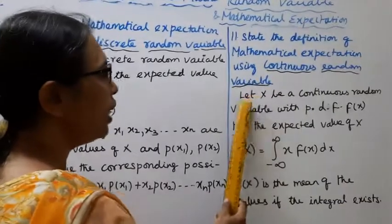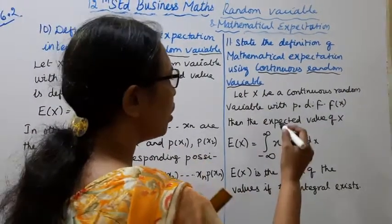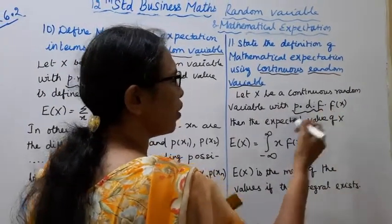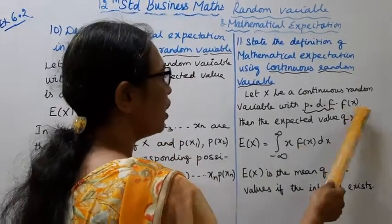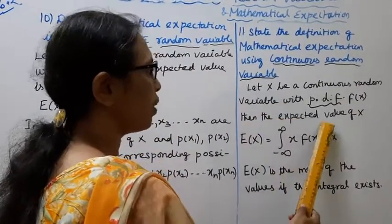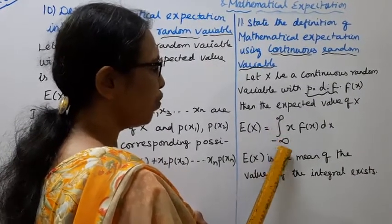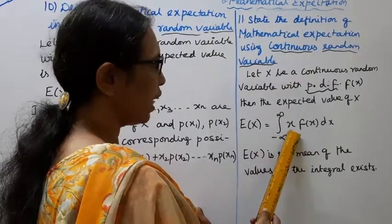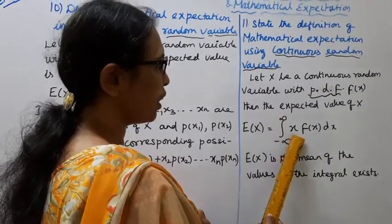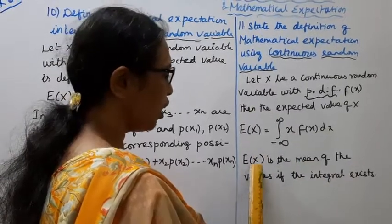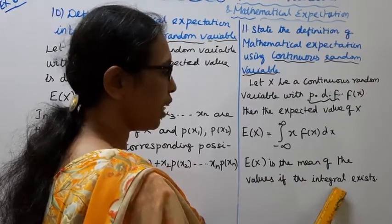Continuous random variable: Let x be a continuous random variable with probability density function f(x). Then the expected value of x, E(x), is the integration from minus infinity to infinity of x·f(x)dx. E(x) is the mean of the values if the integral exists.